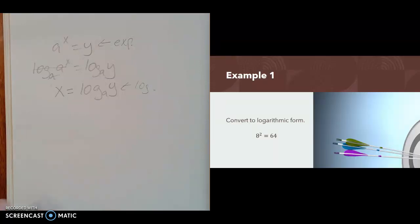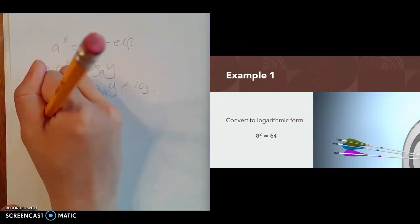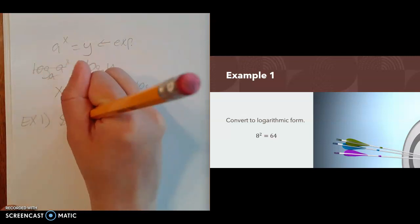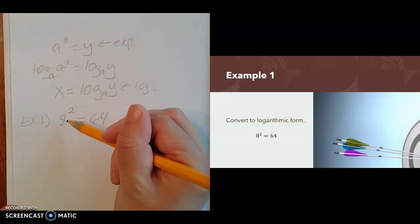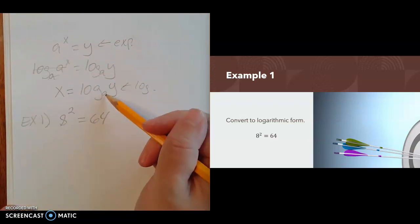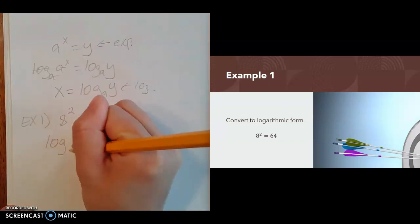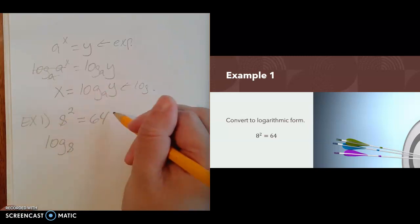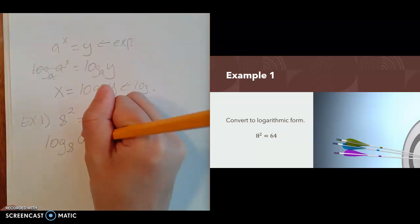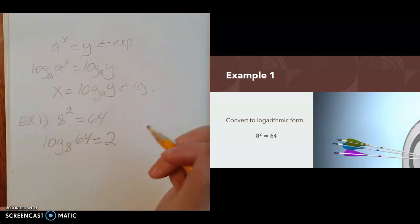Example one: convert to logarithmic form. We start with 8 to the second power equals 64. The base of your exponent is the same as the base of your logarithm. So we're going to have log base 8 of 64, and it equals our exponent, which is 2. That's what logarithmic form looks like.